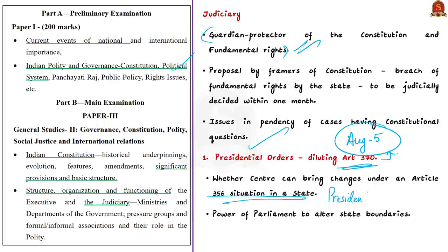Article 356 is the President's Rule provision — when a state government is unable to function according to constitutional provisions, the Union government can take direct control. The question is whether it is possible to bring permanent and irreversible changes when no elected government or assembly is in existence. Answering these questions has important ramifications not just for Jammu and Kashmir but for the entire federal structure of the country. India has a long history of controversy about misusing Article 356, so resolving this will address future misuse as well.